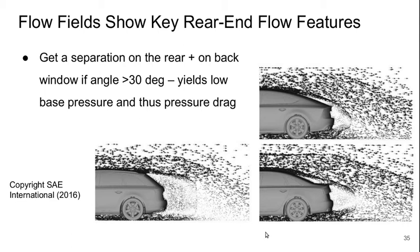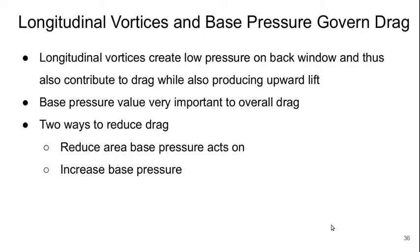Looking at the flow field in terms of velocity vectors at the rear ends for these three types — square back, fast back, and notch back — we always get a separation on the rear, and also on the back window if the angle is greater than about 30 degrees. This yields low base pressure and thus additional pressure drag. The longitudinal vortices and the base pressure govern the drag for these rear ends. Longitudinal vortices create low pressure on the back window, contributing to drag while also producing some upward lift. To reduce drag, you can reduce the area on which base pressure acts, increase the base pressure, or both.